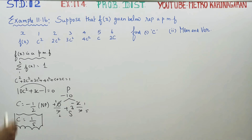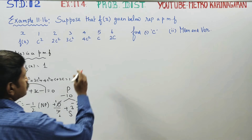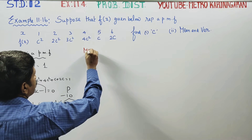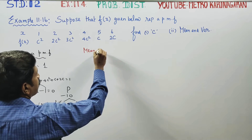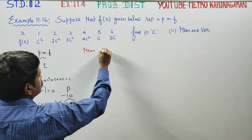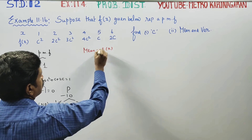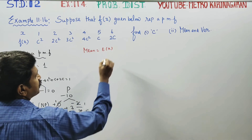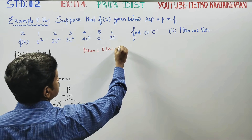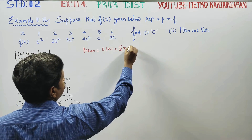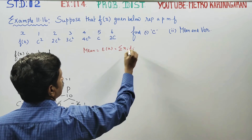After finding C, I want mean and variance. Mean is equal to the expectation of x. The formula for mean is E(X) = sigma xi·fi.